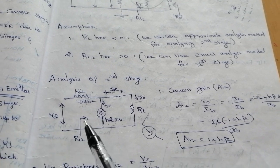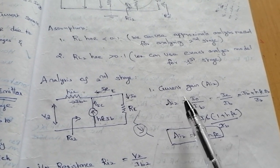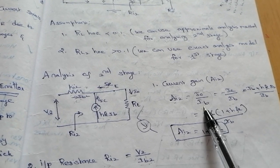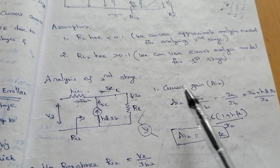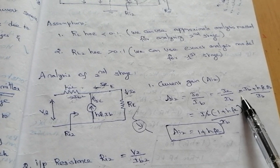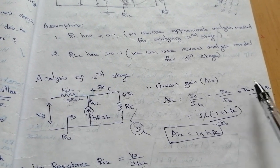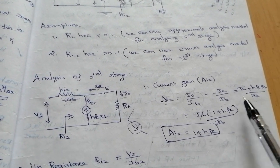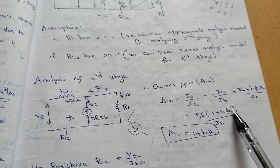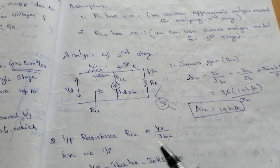From that circuit we can find the current gain. AI2 equals I0 divided by IB, which is output divided by input. I0 equals minus IE divided by IB. IE equals IB plus HFE·IB, divided by IB. Taking IB common and canceling, AI2 equals 1 plus HFE.